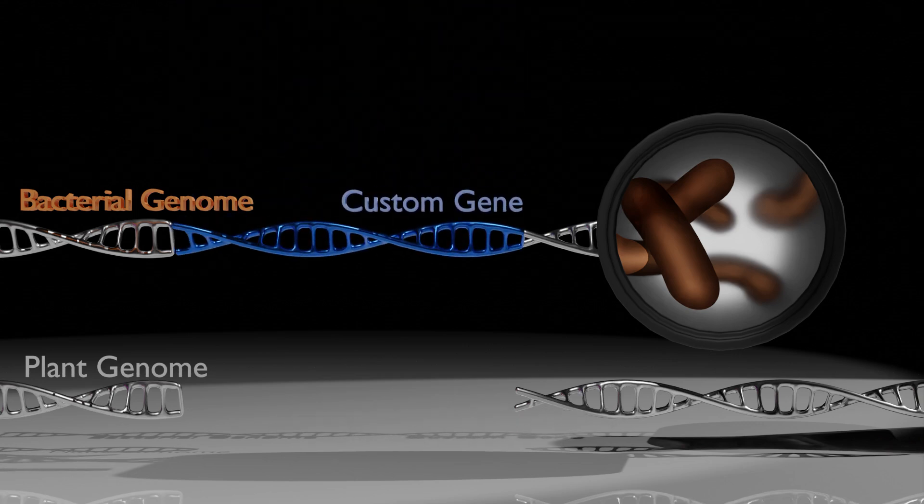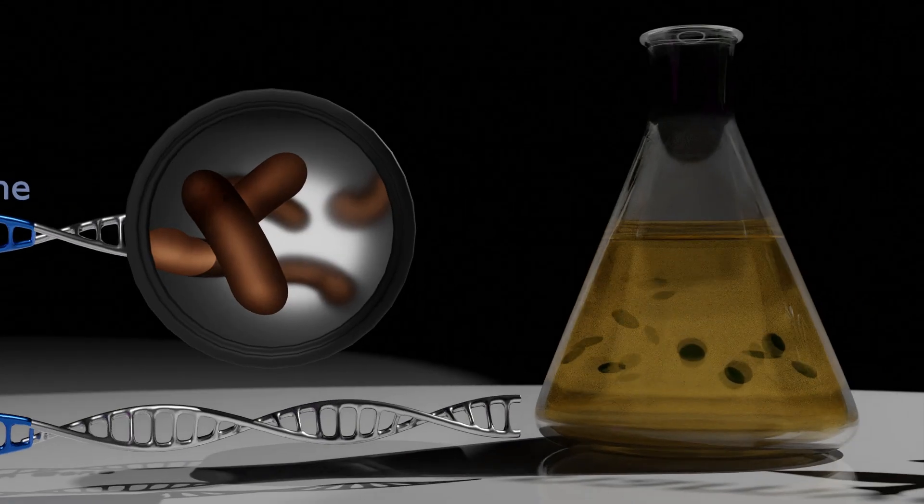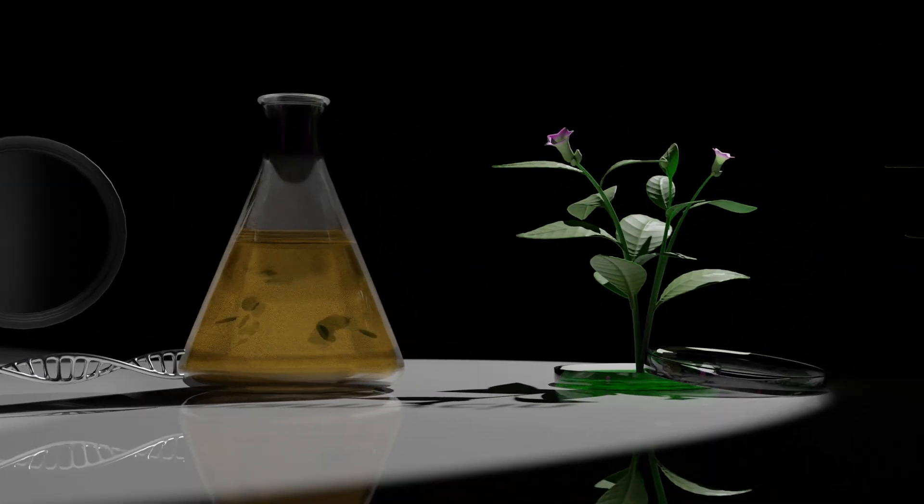By infecting small disks of leaf material from your plant of choice, then growing them on a medium that induces the leaves to grow shoots, you now have your original plant that will contain and express your custom segment of DNA.